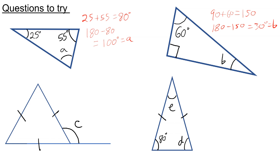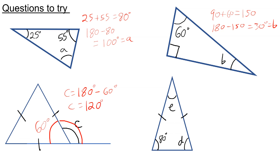We have an equilateral triangle, so all angles inside are 60 degrees. To work out C, it's on a straight line with 60, so I do 180 take away 60, because angles in a straight line add up to 180. That gives 120 degrees. And we have an isosceles triangle, so D needs to be 80 because base angles are equal. 80 plus 80 is 160, and 180 take away 160 is 20. So E is 20 degrees.